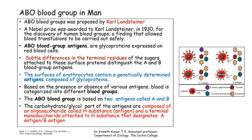This finding paved the way for safe blood transfusions to be carried out. The problem Landsteiner focused on was that when mixing different types of blood, some types mixed properly but others did not mix well — they formed clumps, which was called agglutination. He researched why such clumping occurs in some blood types and not others, and this question led to the discovery of the ABO blood group system.